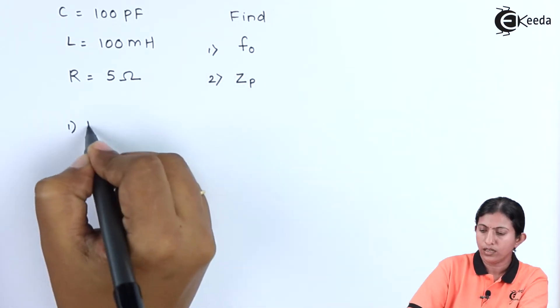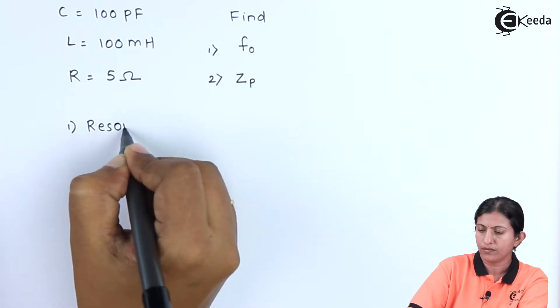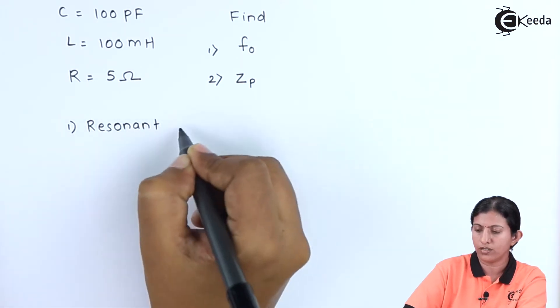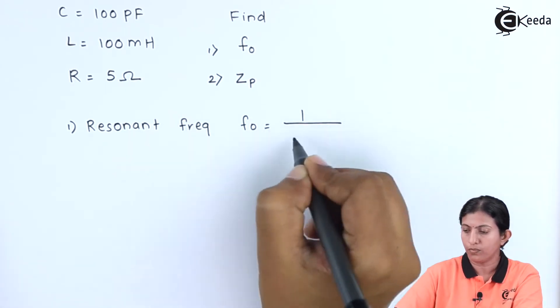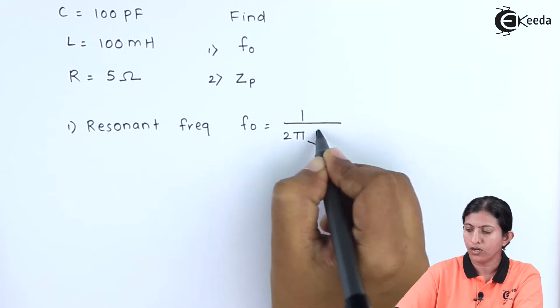We will first find out the resonant frequency of the parallel tuned circuit, which is given as f₀ = 1/(2π√LC).